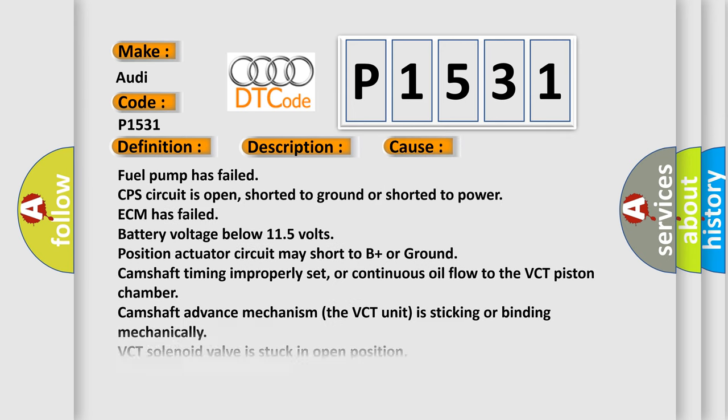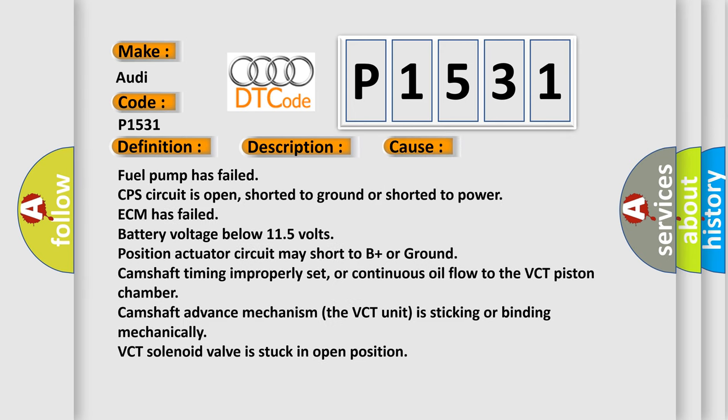This diagnostic error occurs most often in these cases: Fuel pump has failed; CPS circuit is open, shorted to ground, or shorted to power; ECM has failed; battery voltage below 11.5 volts; position actuator circuit may short to B+ or ground; camshaft timing improperly set, or continuous oil flow to the VCT piston chamber; camshaft advance mechanism — the VCT unit is sticking or binding; or the VCT solenoid valve is stuck in open position.